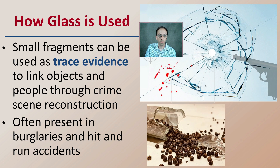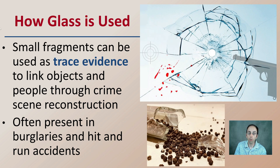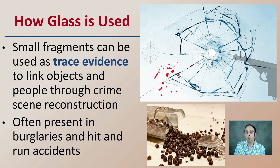So how is glass used in forensic science? Small fragments can be used as trace evidence to link objects and people through a crime scene reconstruction process. That can involve situations where a bullet is piercing a piece of glass, or sometimes even accidental, where something might be knocked over and broken. Those trace elements might be picked up by the person at the scene and found later by an investigator in their clothing or potentially within their shoes. This is often present in places that are robbed through burglaries or hit-and-run accidents as well.